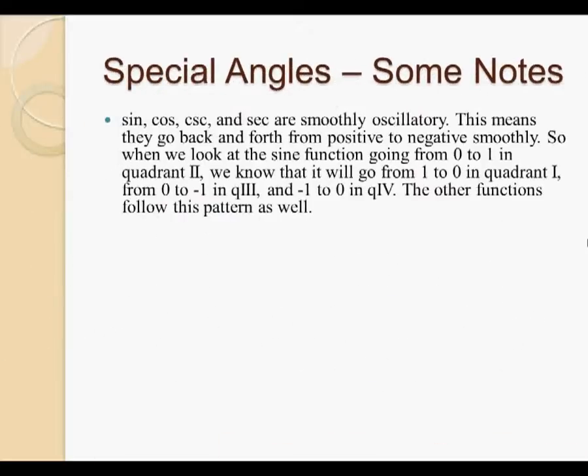Just some notes on special angles. Sine, cosine, cosecant, and secant are smoothly oscillatory. This means they go back and forth from positive to negative smoothly. So when we look at the sine function going from 0 to 1 in quadrant 2, we know that it will go from 1 to 0 in quadrant 1, from 0 to negative 1 in quadrant 3, and from negative 1 to 0 in quadrant 4. The other functions, cosine, cosecant, and secant, follow this pattern as well. Tangent is not. That is important to note.